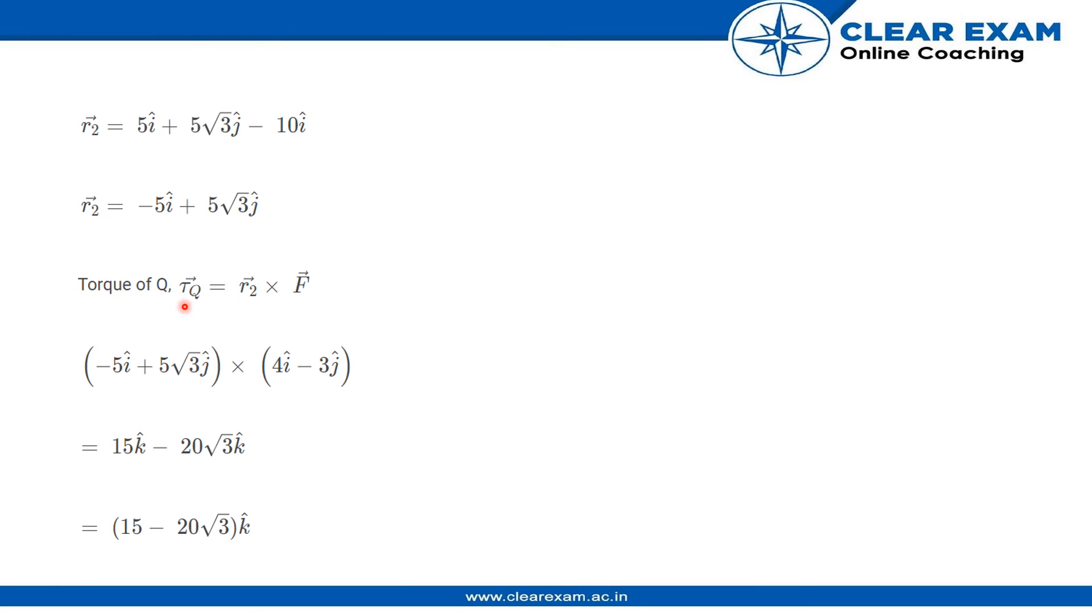So torque τ = r2 × F = (-5i + 5√3j) × (4i - 3j). On crossing both these vectors, we get 15k - 20√3k, which gives us the torque about point O and torque about point Q.